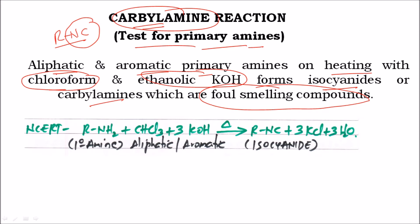The reaction is: a primary amine RNH2, upon reaction with chloroform and three moles of alcoholic potassium hydroxide upon heating, results in formation of RNC — isocyanide — plus three moles of KCl and three moles of water. So the main conversion is: primary amine is converted into isocyanide. Let us now see its mechanism.